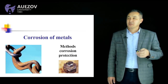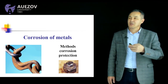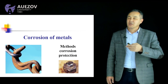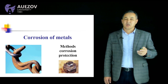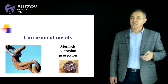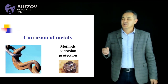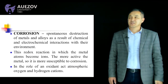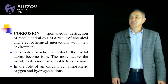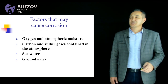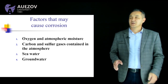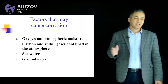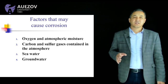Within redox processes we can observe the corrosion phenomenon. Corrosion is the spontaneous destruction of metals and alloys as a result of chemical and electrochemical interactions with their environment. Factors that may cause corrosion include oxygen, atmospheric moisture, carbon and sulfur gases contained in the atmosphere, and sea water and ground water.